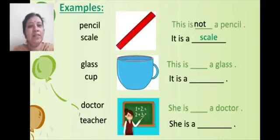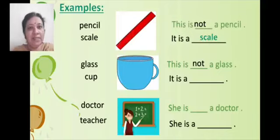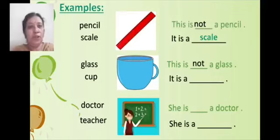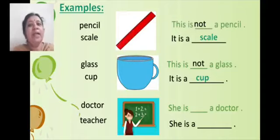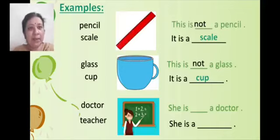Now see the next picture: glass — G-L-A-S-S — and cup — C-U-P. What I will write? This is not a glass. It is a cup. Where do we use a cup? To drink tea, coffee, or milk. We use a cup.